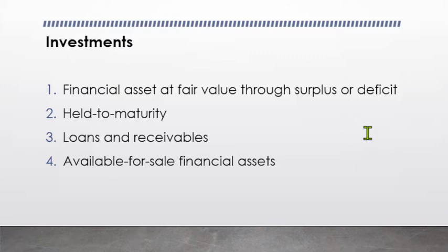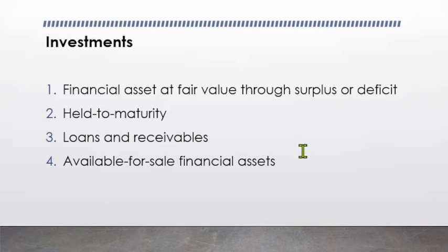On page 173, a tabulation summarizing the measurements of investments is discussed, where these four categories are identified. Initially, as seen in the tabulation, the initial measurement of financial asset at fair value through surplus or deficit is at fair value, while the initial measurement of the rest is at fair value plus transaction cost.